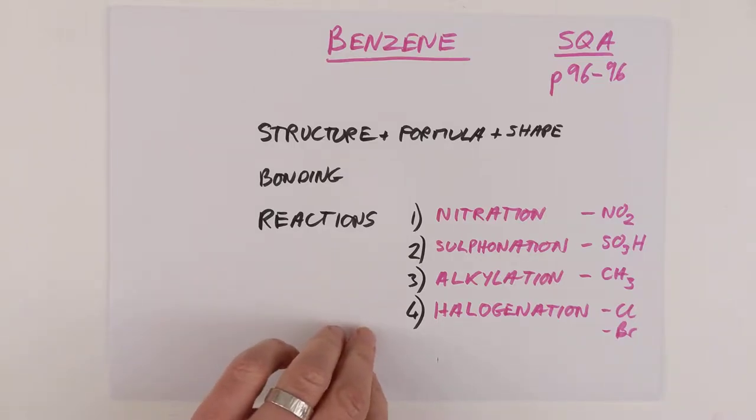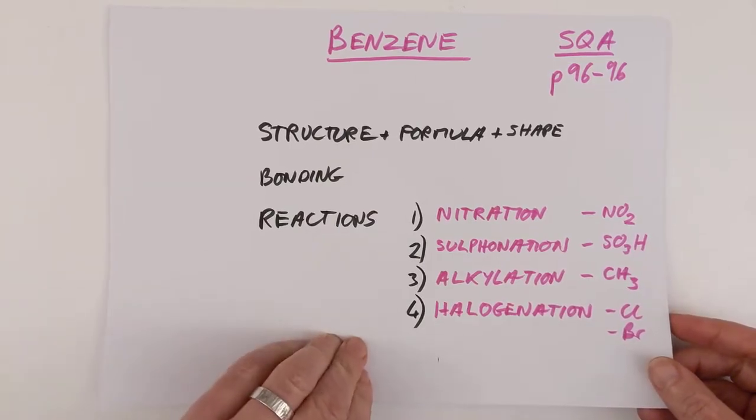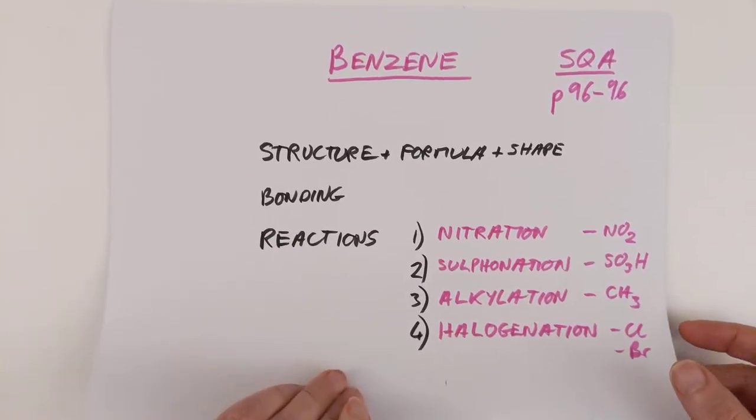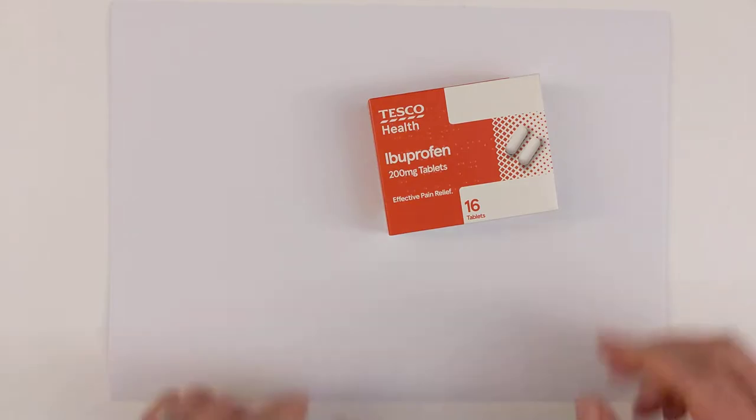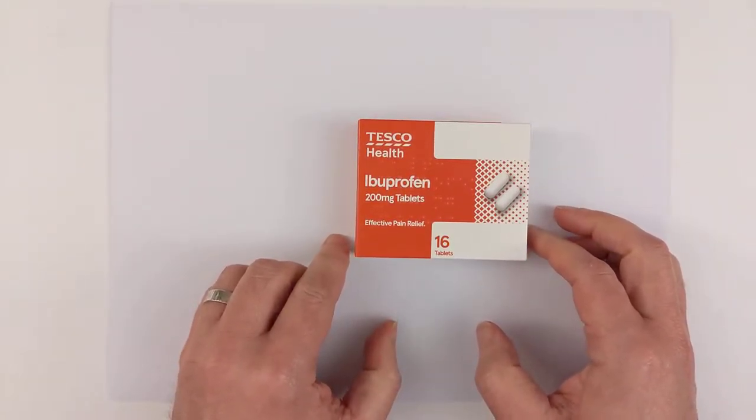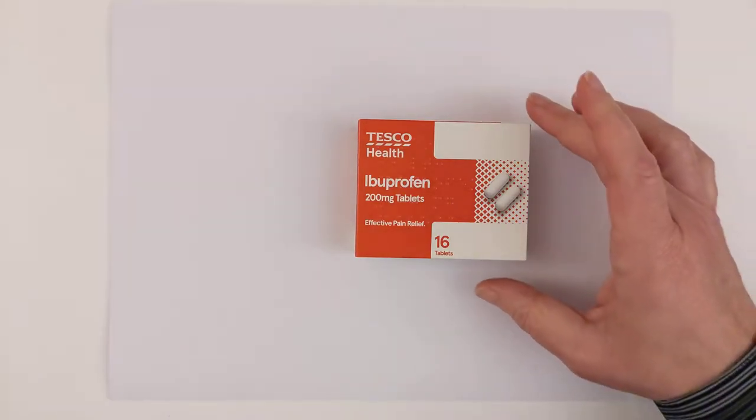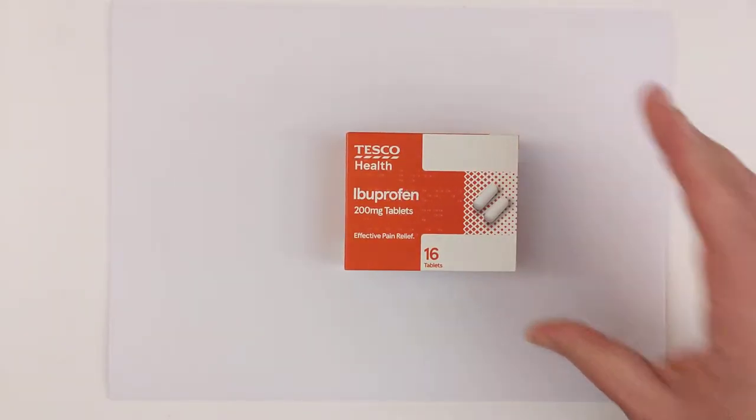I think we'll start with the structure and formula and shape. Benzene is a chemical you don't get your hands on much in school, because pure benzene itself is a proven carcinogen. It causes cancer. Having said that, this video is sponsored by ibuprofen, invented by Boots in the 1960s. It was a complete synthetic molecule. And it's got a benzene ring stuck at the centre of it.